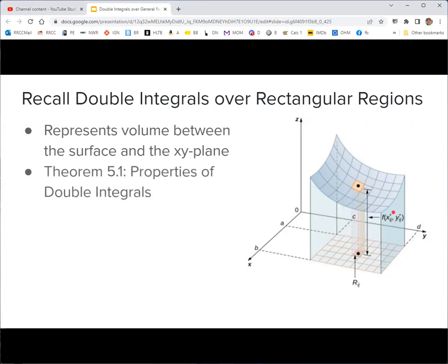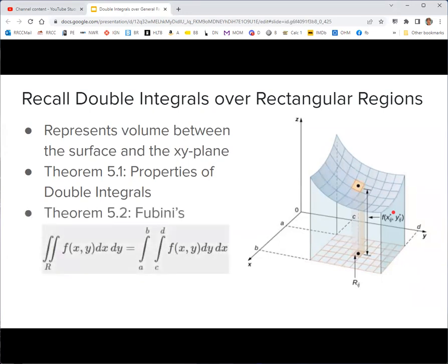Now in Theorem 5.1, we laid out some properties of double integrals, like you could distribute them over a sum and factor off a constant. In Theorem 5.2, we said that the double integral over this rectangular region was equal to both of the iterated single integrals, so you could take the function and integrate with respect to y and then integrate with respect to x. You could do the order either way and it would give you the same result.